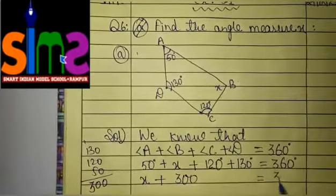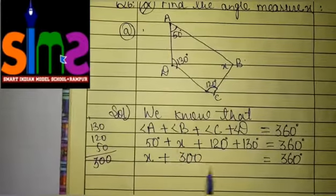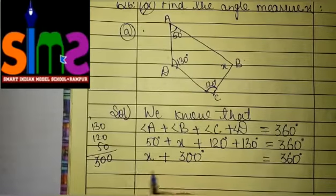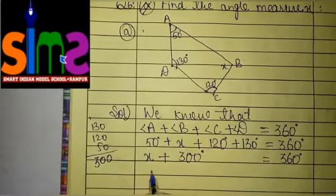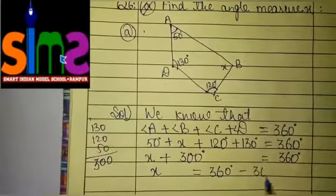And in equal to we have 360 degree. Now, what we will do with you? We will remove this 300 degree from left hand side to right hand side to find out the value of X. So our next step will be X will be equal to 360 degree minus 300 degree.